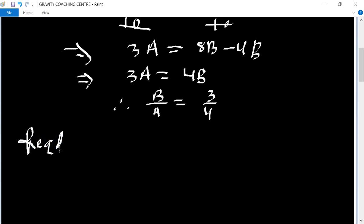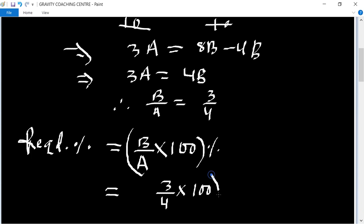...B upon A times 100 percent, which equals 3 upon 4 multiplied by 100 percent...